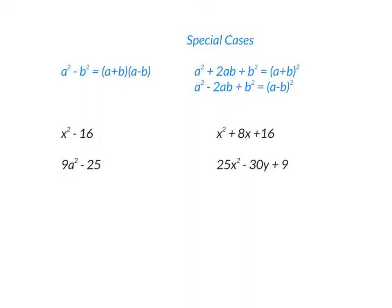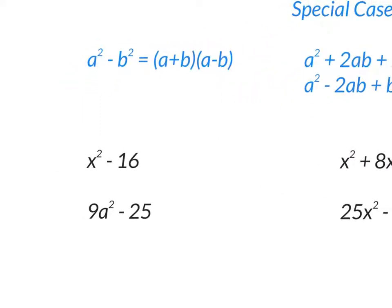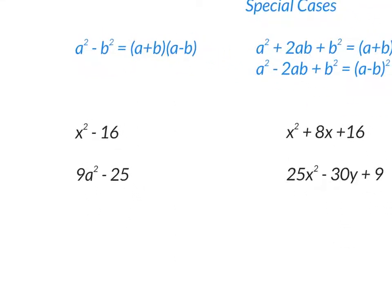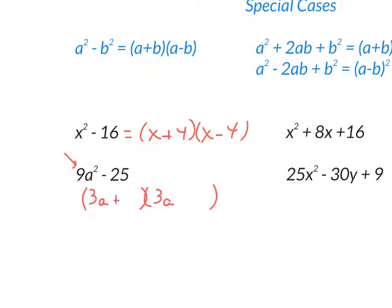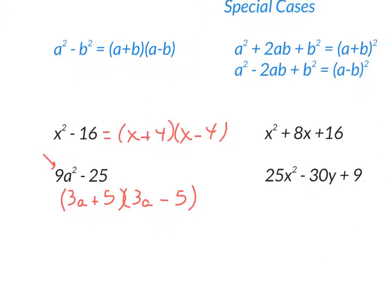Two special cases. First: difference of squares. Both terms must have square roots. For x² − 16, take the square root of each — x and 4 — and write one with addition and one with subtraction: (x + 4)(x − 4). You need both signs because multiplying a positive and a negative gives the negative term. For 9a² − 25, the square root of 9a² is 3a and of 25 is 5, giving (3a + 5)(3a − 5).